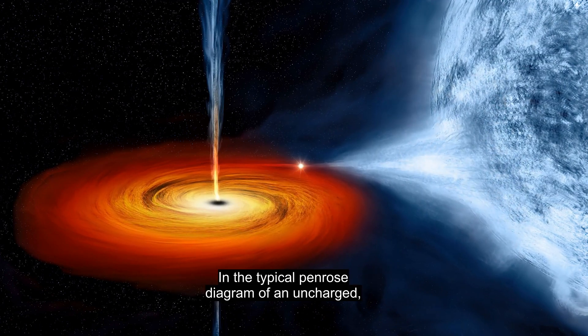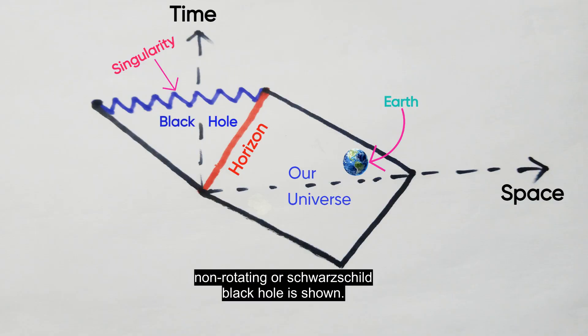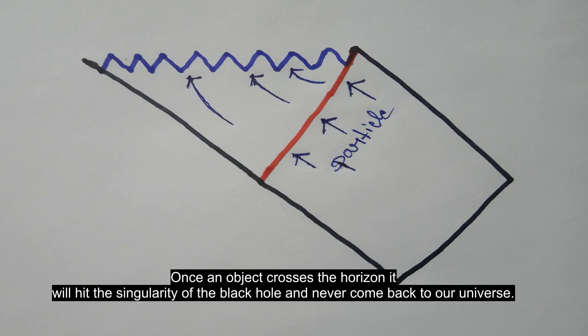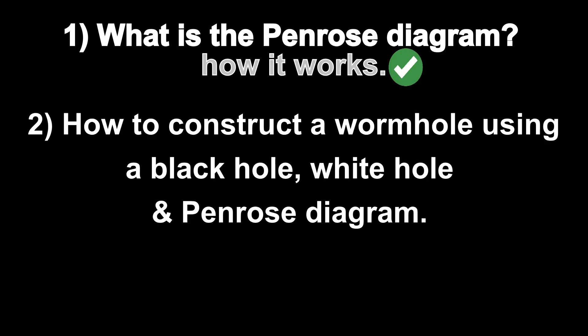A typical Penrose Diagram of an uncharged, non-rotating or Schwarzschild black hole is shown. Once an object crosses the horizon, it will hit the singularity of the black hole and never come back to our universe. How to construct a wormhole using a black hole?